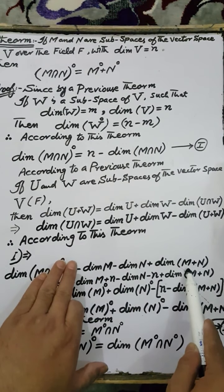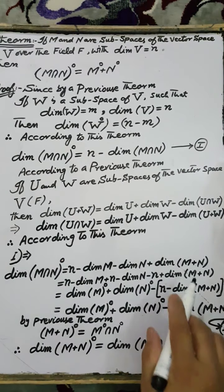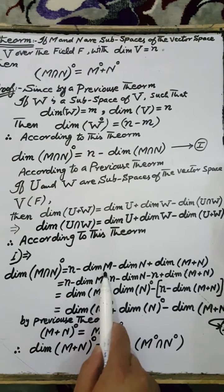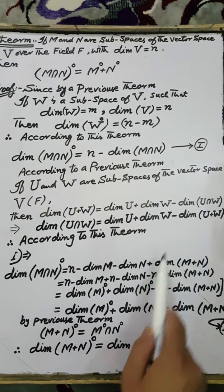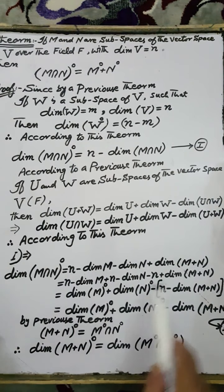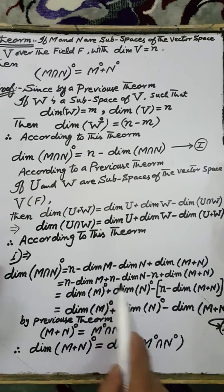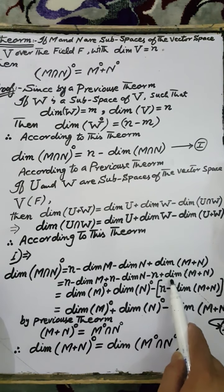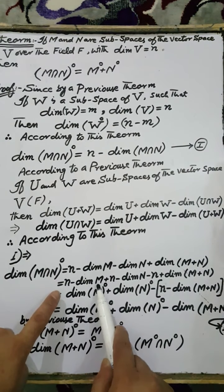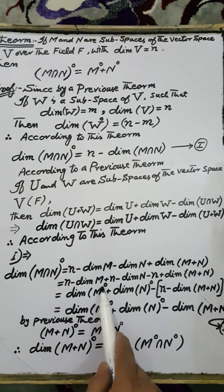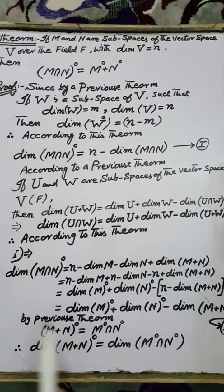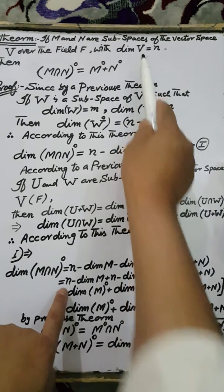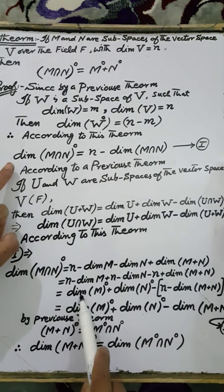This gives us: n minus dimension of M minus dimension of N plus dimension of M plus N. Adding and subtracting n to rearrange terms, we get: n minus dimension of M plus n minus dimension of N minus n plus dimension of M plus N. Now, n minus dimension of M, where M is a subspace of the vector space V over the field F, equals the dimension of the set of all annihilators of M.